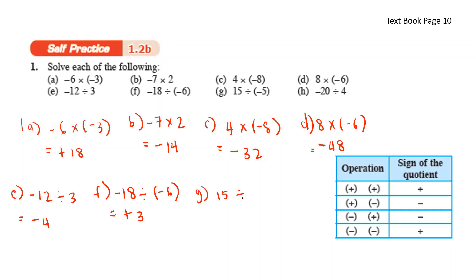15 divided by negative 5 — positive and negative, you get negative. 15 divided by 5, you get 3. And lastly, negative 20 divided by 4 — negative and positive, you get negative. 20 divided by 4, you get 5.